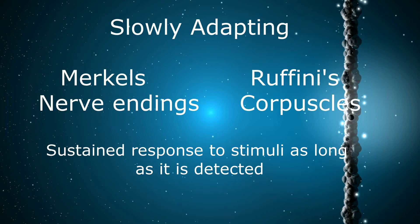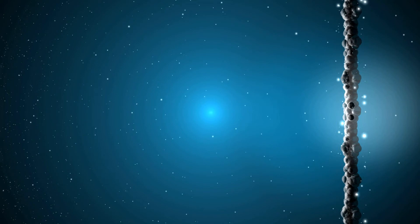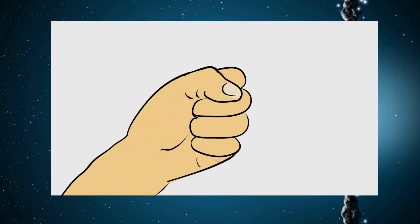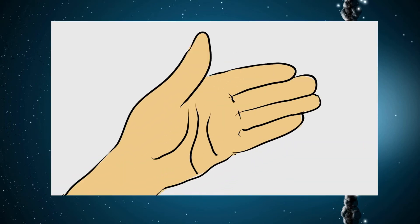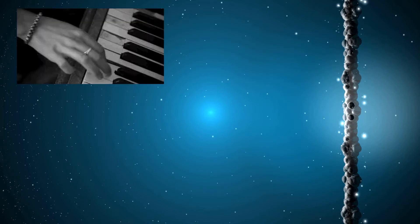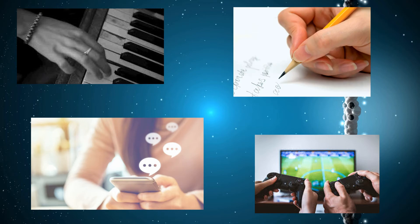So what kind of stimulus do Ruffini's corpuscles respond to, and how exactly do they respond? Ruffini's endings detect stretch in the skin, deformation or movement in the joints, and also warmth. This is really important for controlling how we grip onto objects, and the position and movement of our fingers. If you play any sort of instrument, enjoy video games, like to text, or even know how to write with a pencil, then you're using your Ruffini's endings.